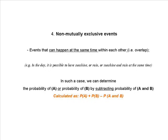Lastly, we have non-mutually exclusive events, which are events that can happen at the same time, meaning they overlap. For example, you can have rain and sunshine happening at the same time. Where you have 2 non-mutually exclusive events A and B, it is possible to determine the probability of A or the probability of B by subtracting the probability of A and B.